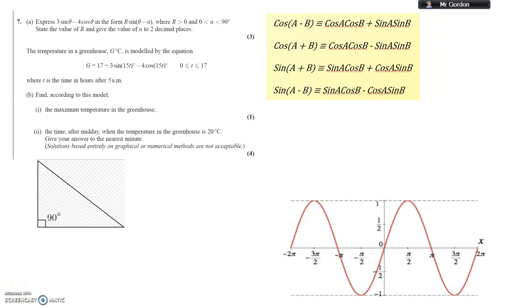Right guys, question 7. This is the third take now, so let's hope I get this right. 3 sine theta minus 4 cos theta, express it in the form R sine theta minus alpha.